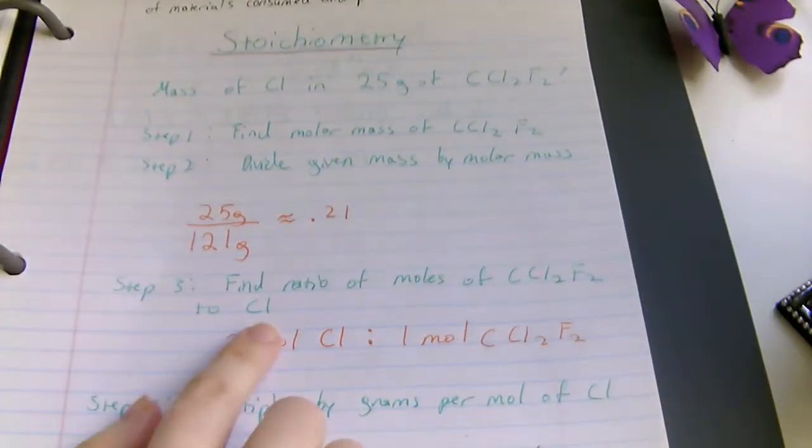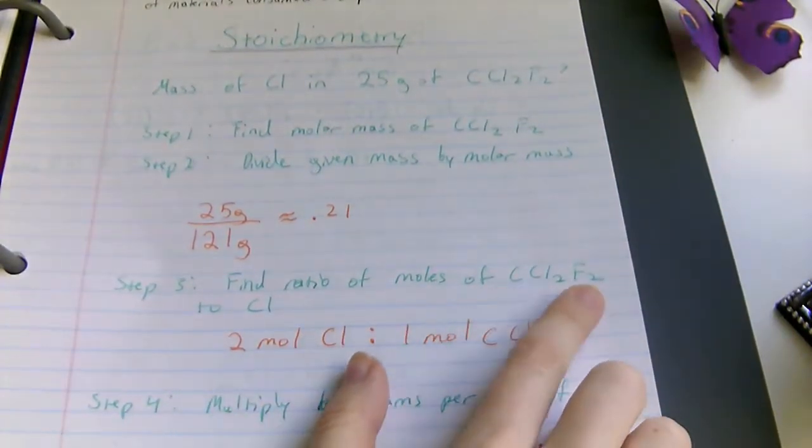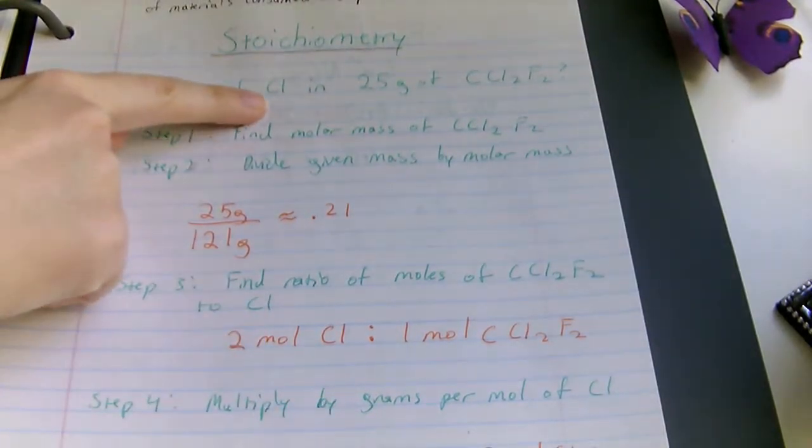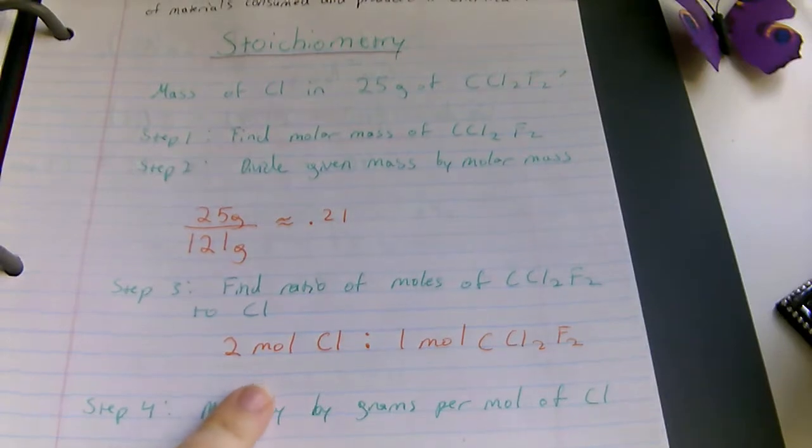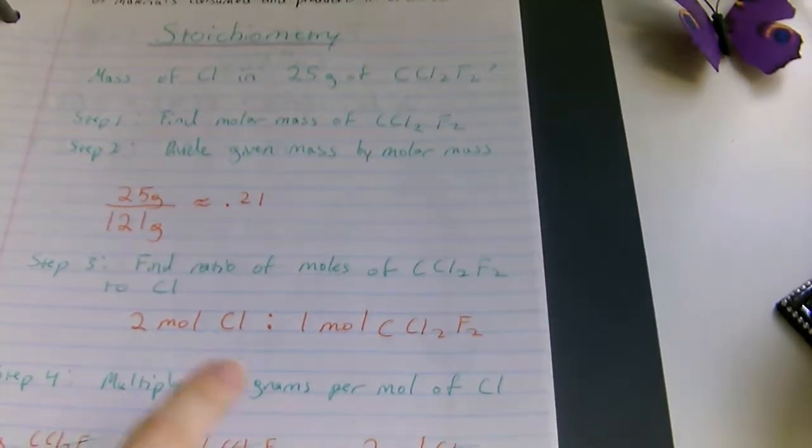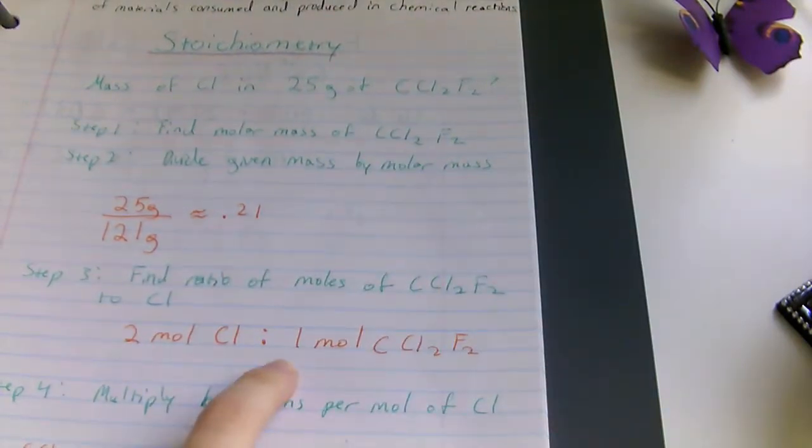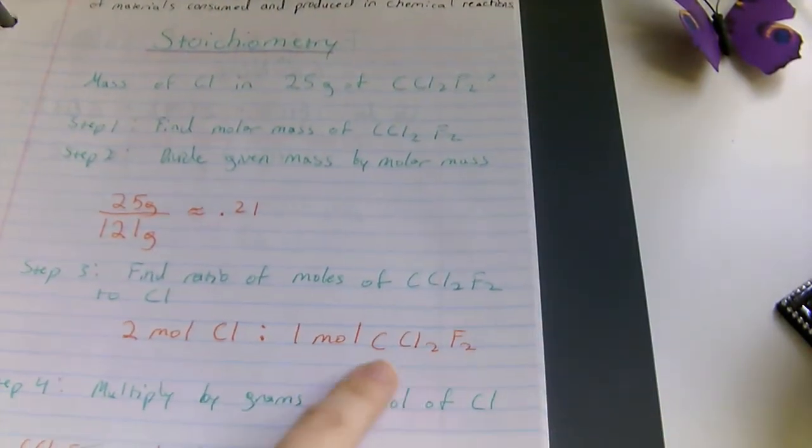Step three, find the ratio of the moles of the whole thing to just the part that they want to find out about, chloride in this case. So, two moles of chloride to one mole of the whole compound.